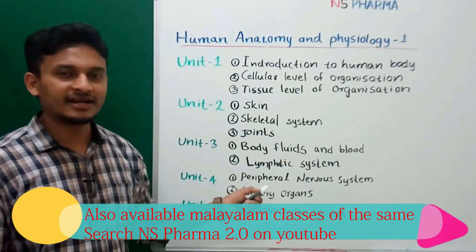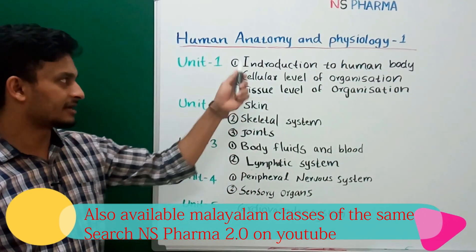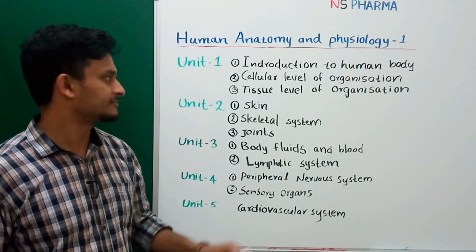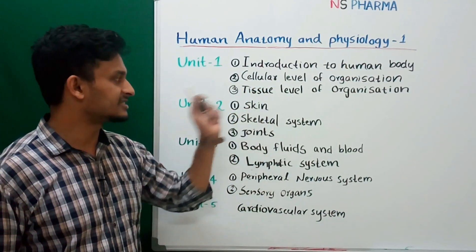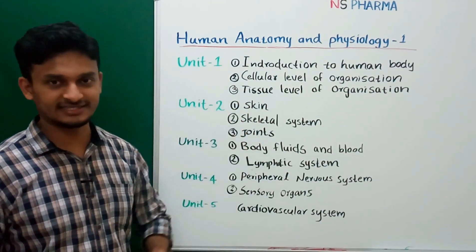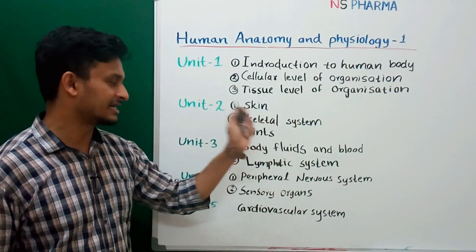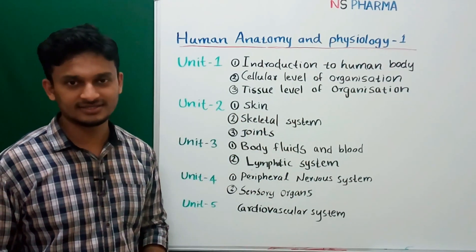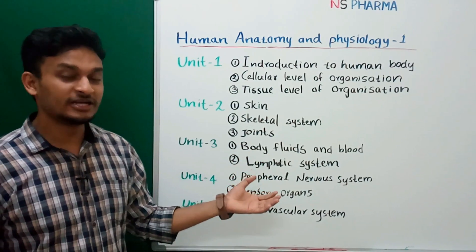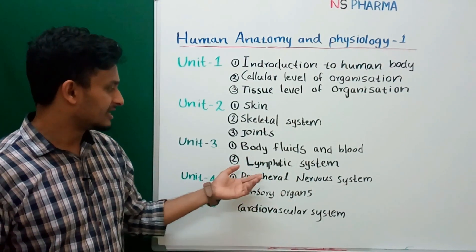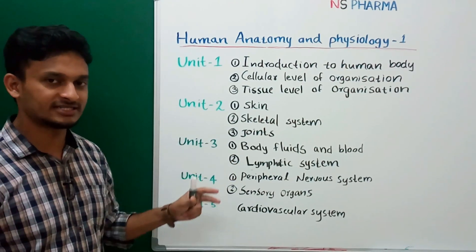Now I will give you a brief idea of what chapters you have to cover in semester 1, Human Anatomy and Physiology. The second chapter is Cellular Level of Organization. The third chapter is Tissue Level of Organization. In the second unit, you have to study Skin, Skeletal System, and Joints. In the third unit, Body Fluids and Blood, then Lymphatic System — these two chapters you have to cover in unit 3.